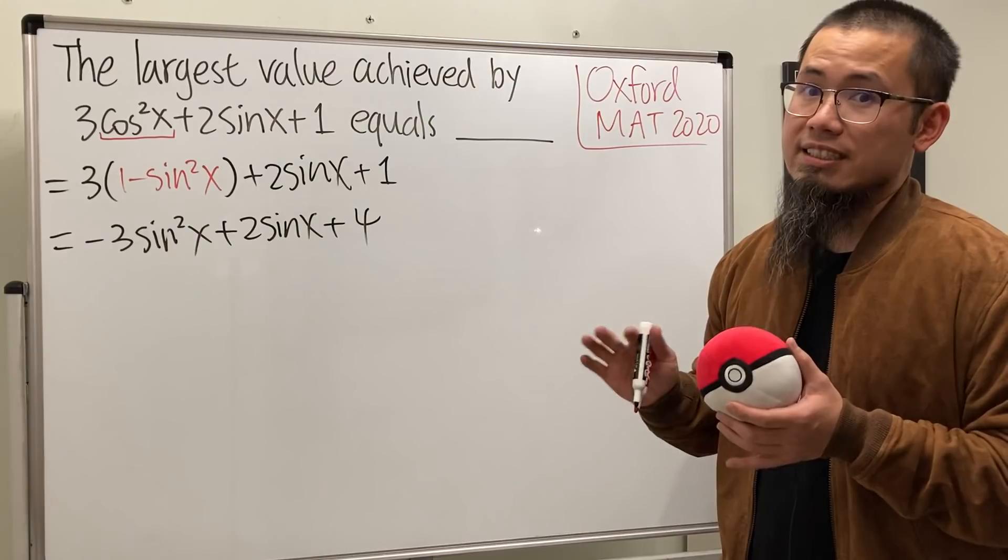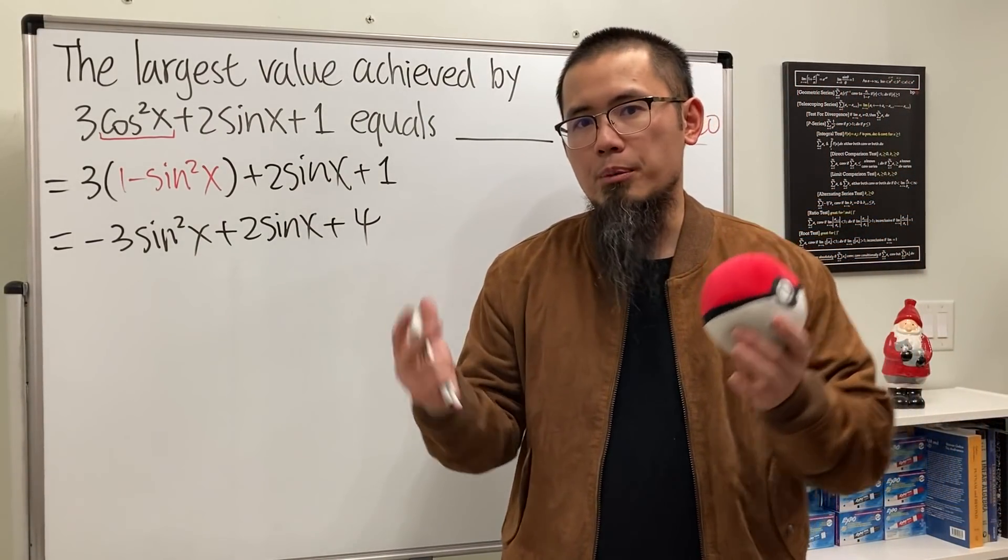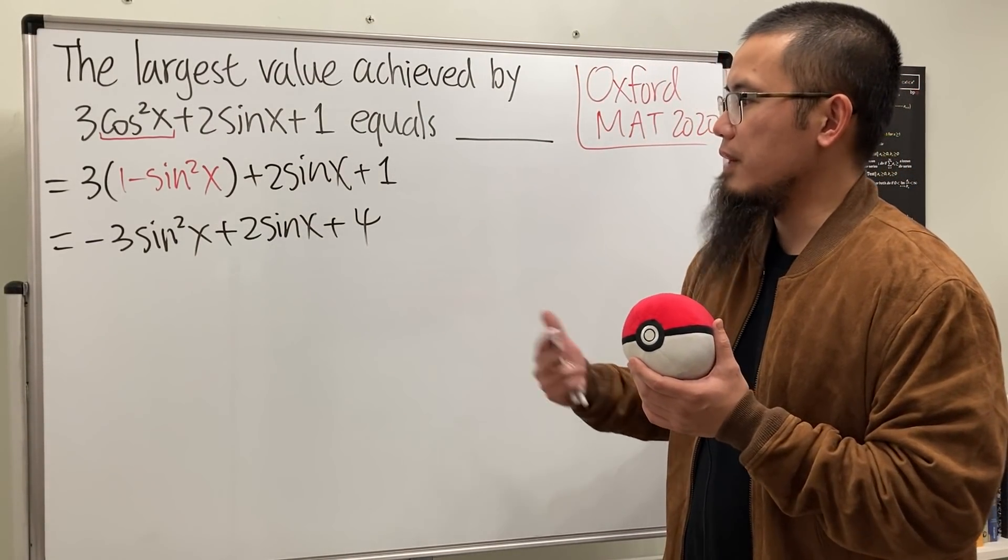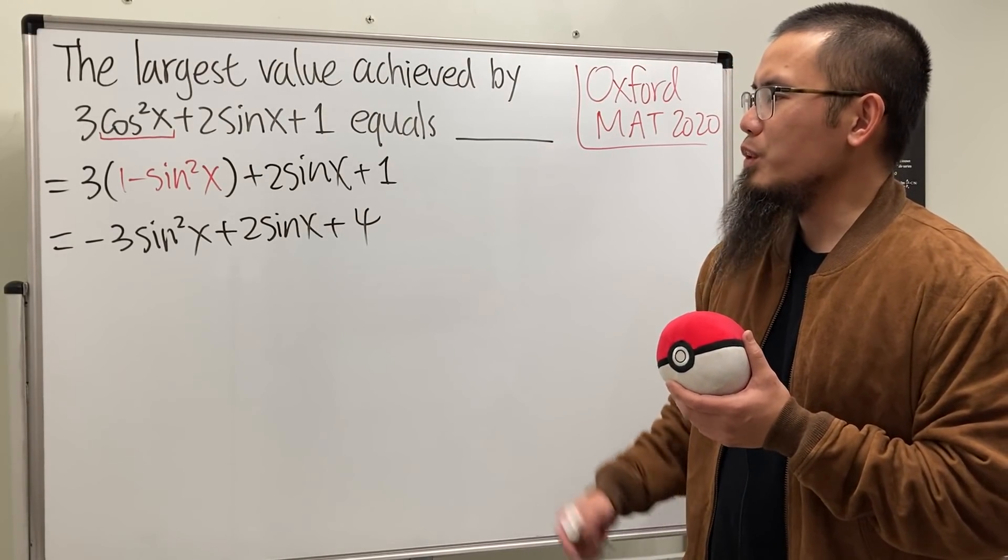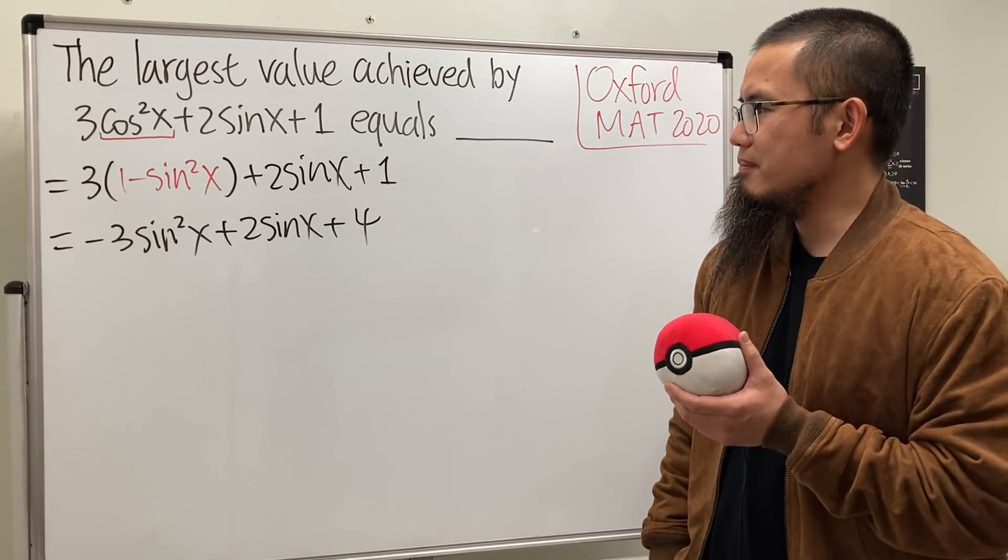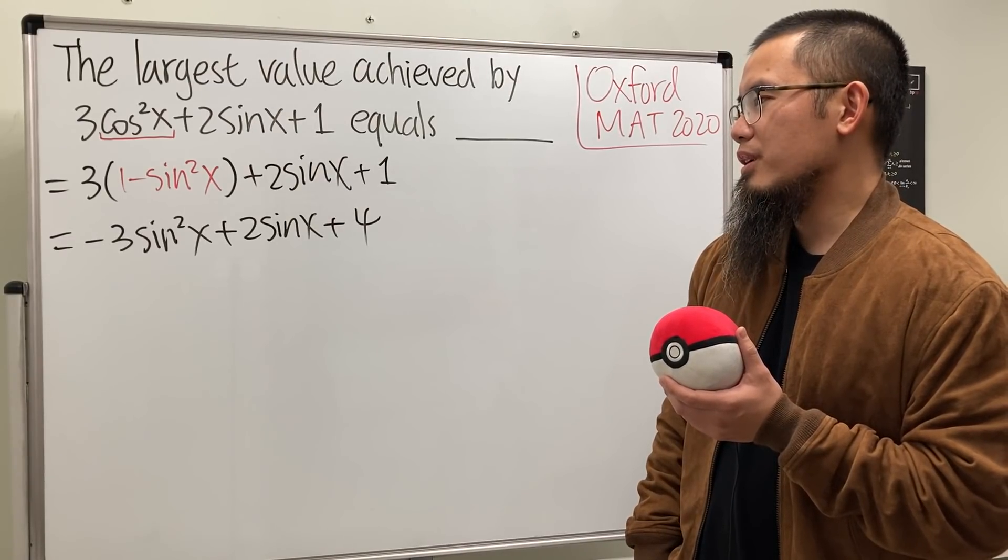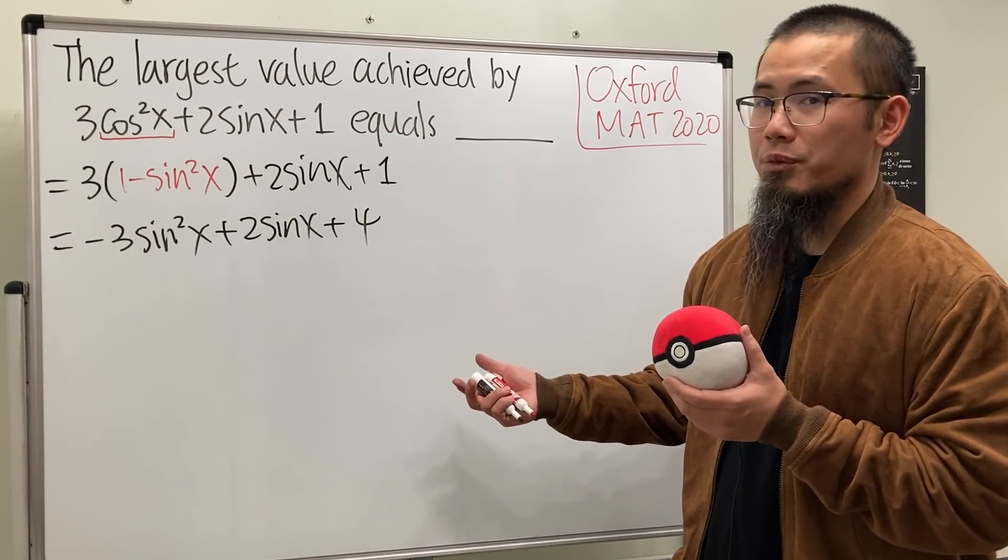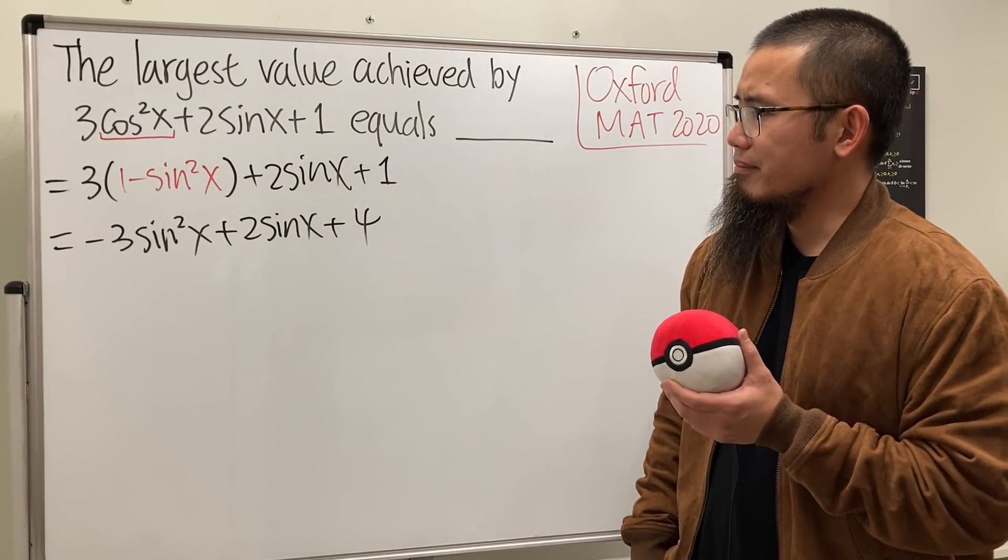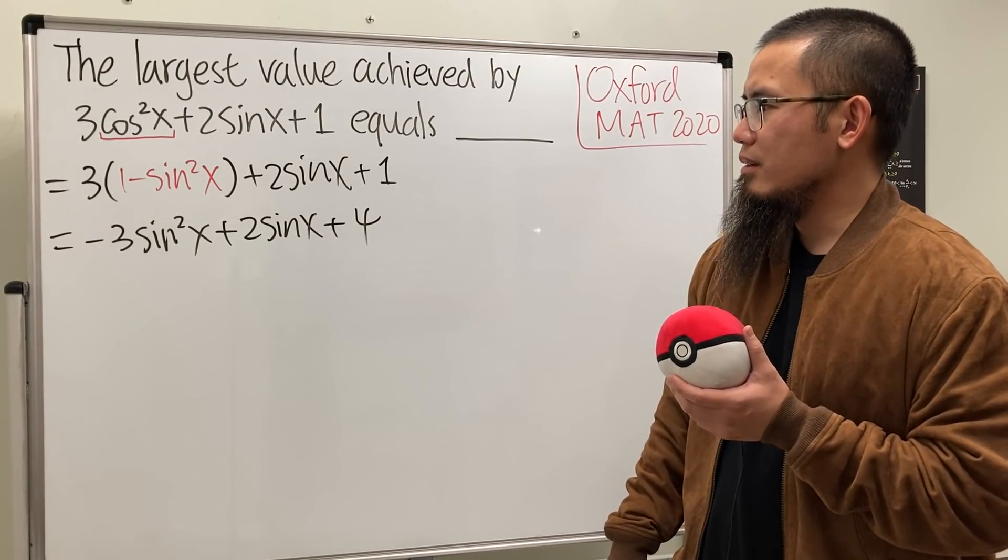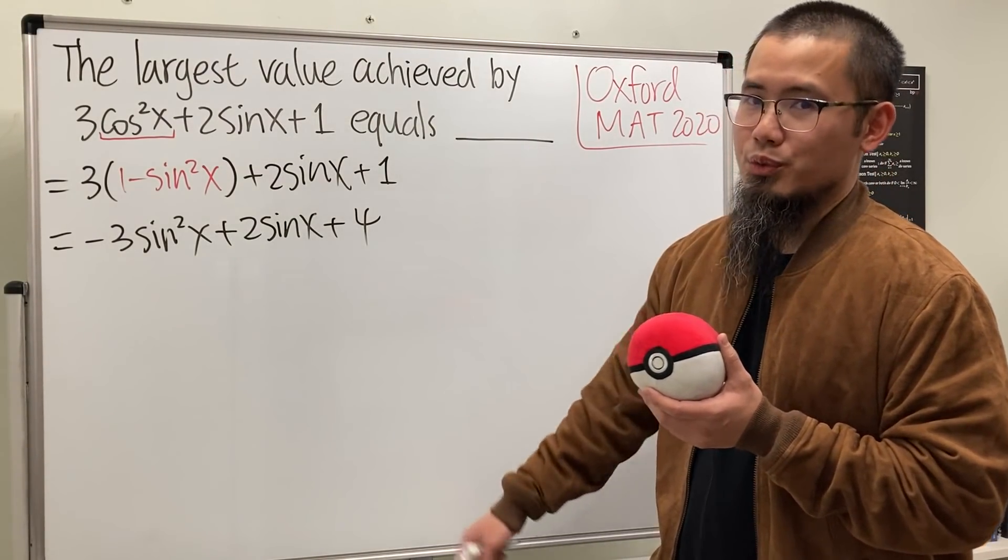You see we have a quadratic in terms of sine x. That's very nice because we can actually just complete the square so that we can find the vertex. Can we use the vertex formula here though? You could. You can find the vertex using the vertex formula negative b over 2a, plug in and then work that out. Maybe let's do that, or complete the square, up to you.